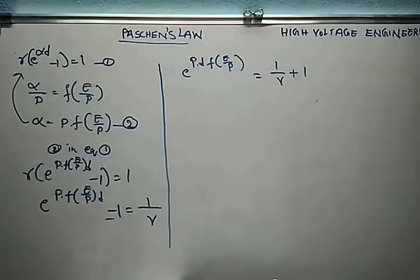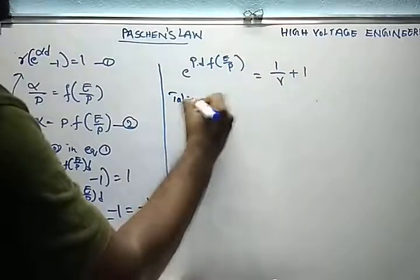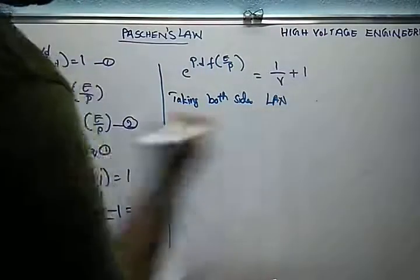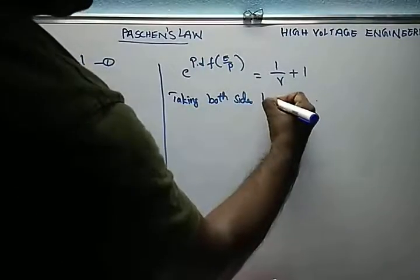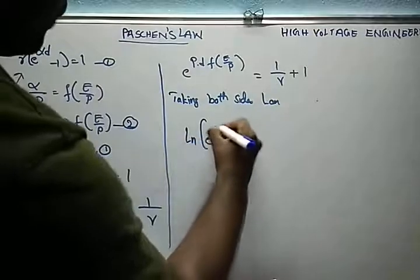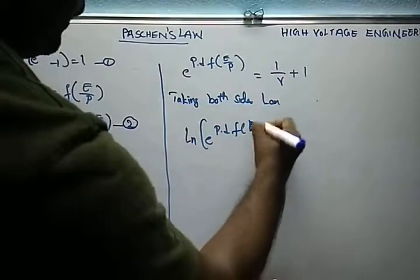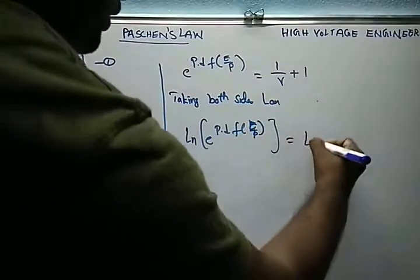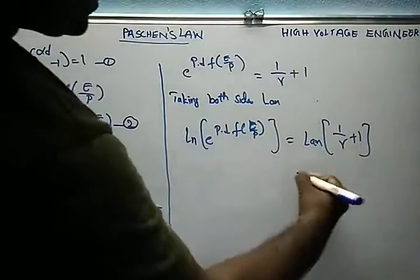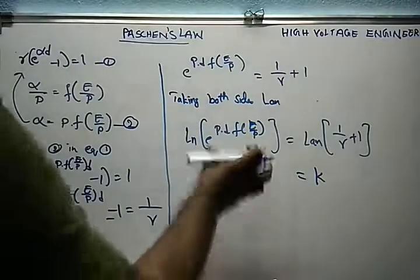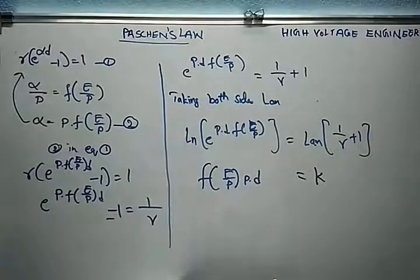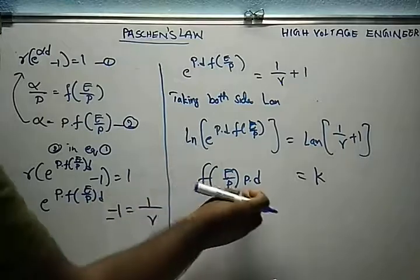Taking the natural logarithm (ln) on both sides: ln(e^(pd · f(E/p))) = ln(1/γ + 1). We consider the right-hand side as a constant k. So: f(E/p) · pd = k.